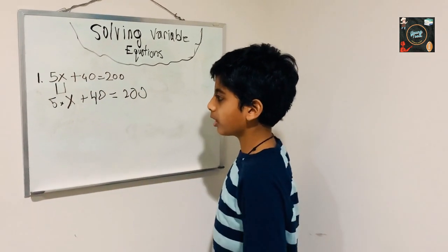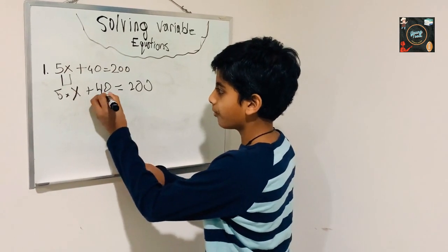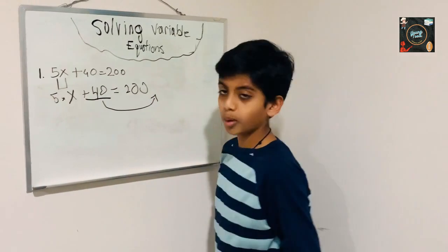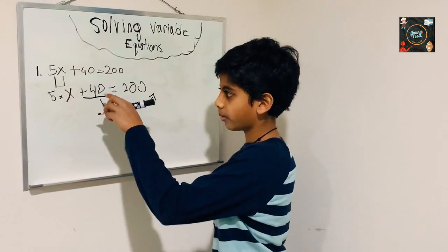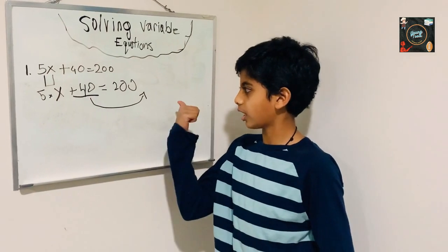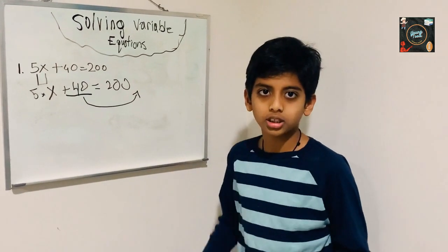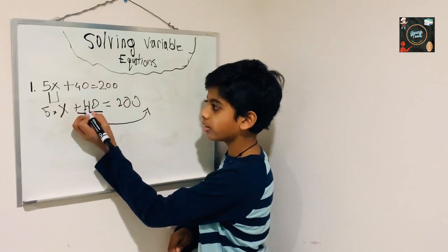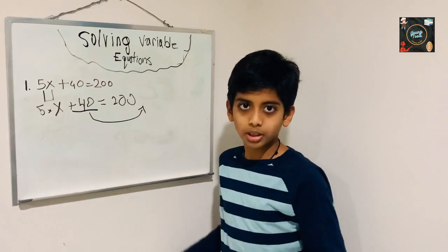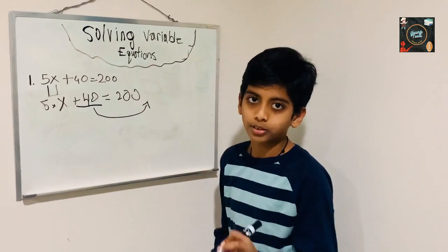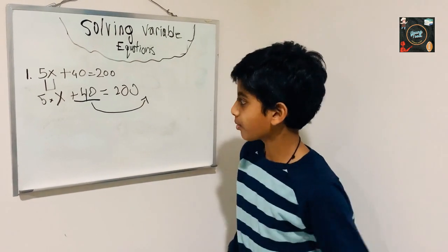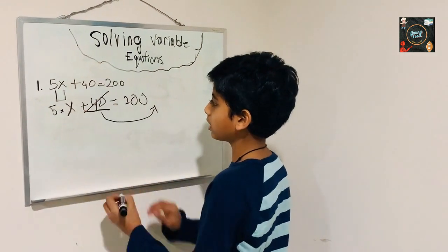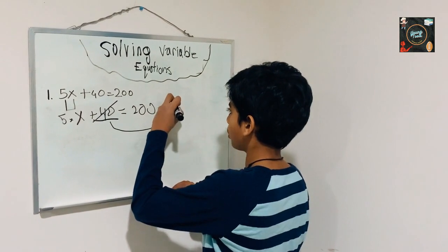Now what we have to do is switch the number 40 to the other side. When we switch 40 to the other side, we have to change its sign. In this equation, 40 is positive, so when we switch it over we have to change it to negative. So I can cross this out and I get minus 40.